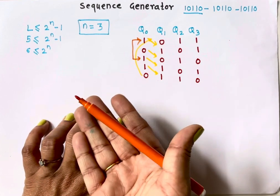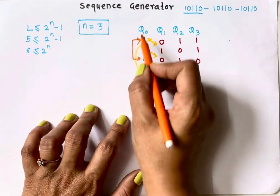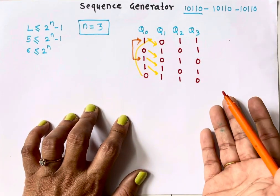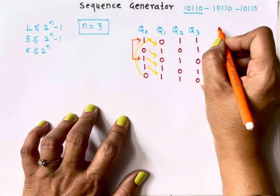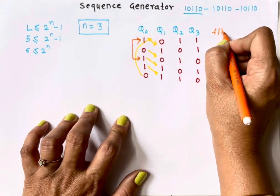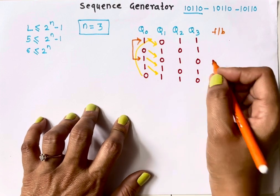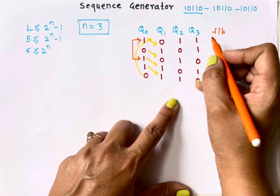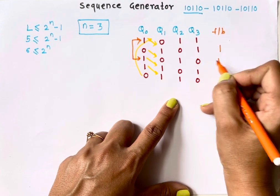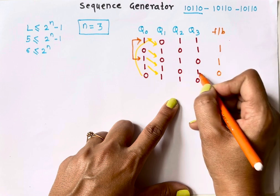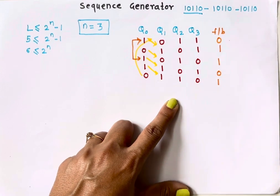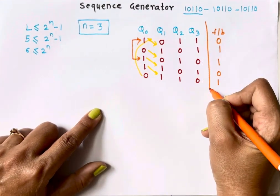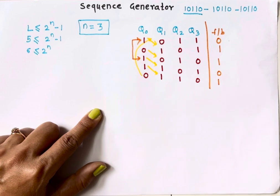But what about the input to the first flip-flop? Output of the first flip-flop connects to the input of the second, and output of the second to the input of the third — that's fine. But we need to identify the input to the first flip-flop, which can also be called the feedback. To identify the feedback, we simply shift the pattern again, then find an equation using a K-map.